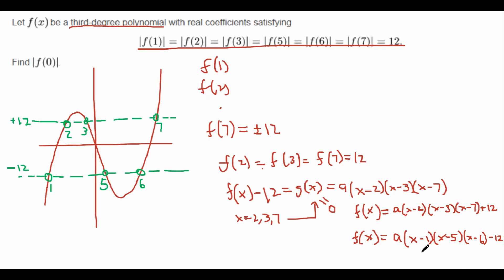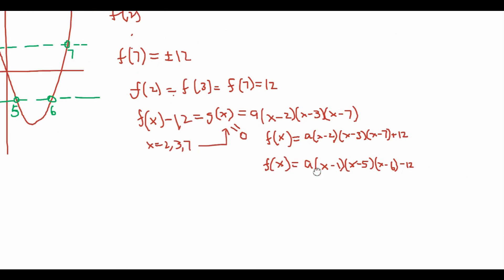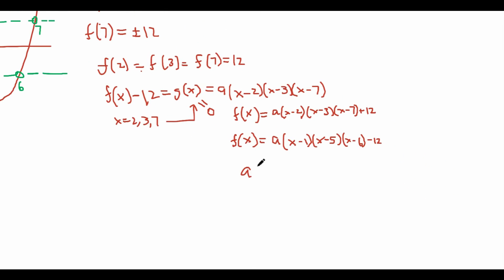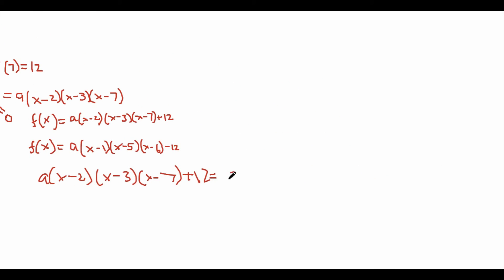So now we have two different equations that both tell us what f(x) is. So now we can solve for a by equating these two. So let's do that. We have a(x - 2)(x - 3)(x - 7) + 12 = a(x - 1)(x - 5)(x - 6) - 12.